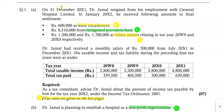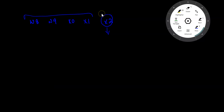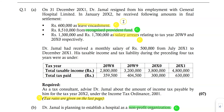The information is that he resigned on 21st December 20X1, and in January 20X2 he received the following amounts in final settlement. Since he received these amounts in January 20X2, it falls within the tax year X2, which runs from July X1 to June X2. The first amount mentioned is 600,000 as leave encashment.